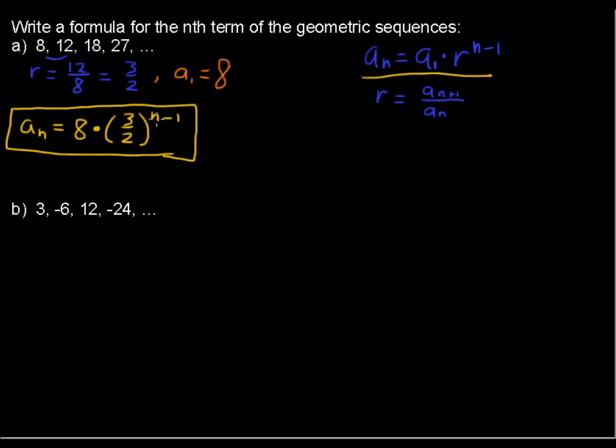So for example, if we put in n equals 1 here, we'd have 1 minus 1, and anything raised to the 0 power is just 1. So let's just do a little example here. When n equals 1, that is a sub 1 should equal 8. Let's see what happens.